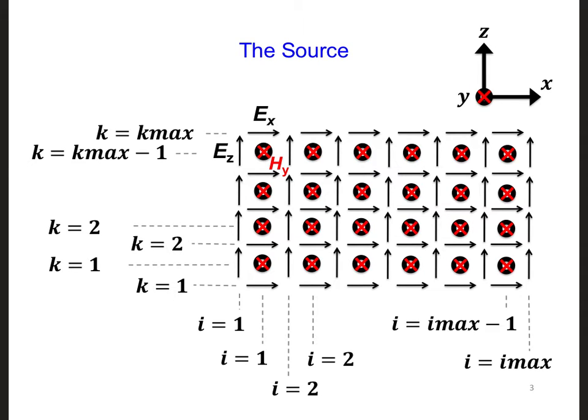To check for symmetry, we should start by putting a source on one H_y component. For simplicity, let's make it a hard source.